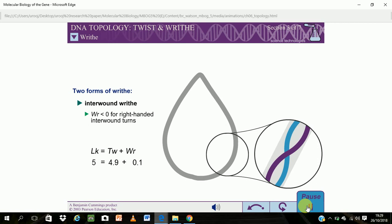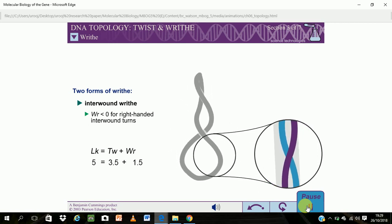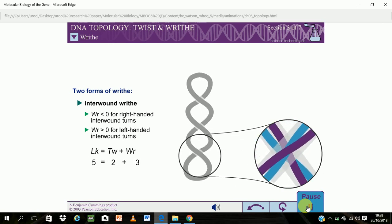If right-handed DNA writhes to form a left-handed interwound helix, the twist number of the DNA decreases. Therefore, left-handed interwound turns are assigned positive writhing numbers.